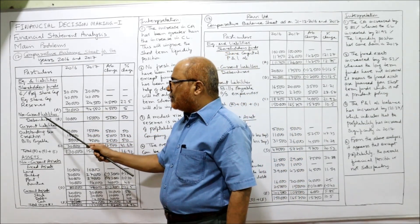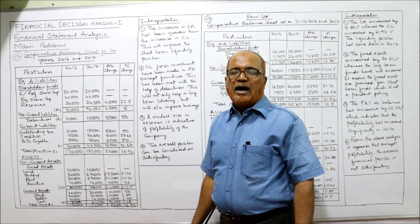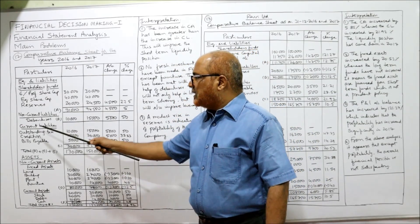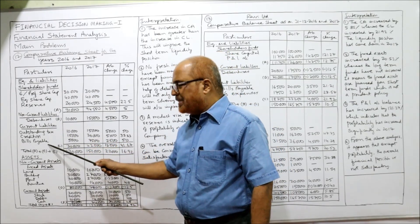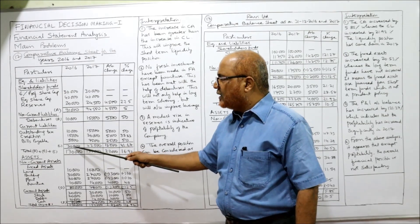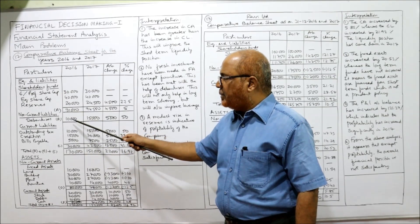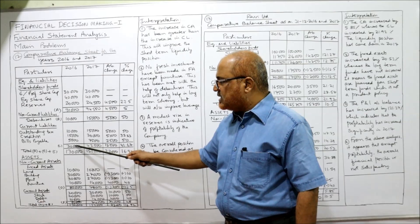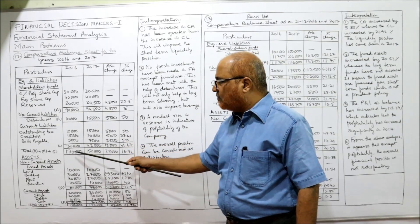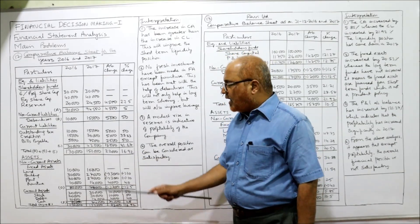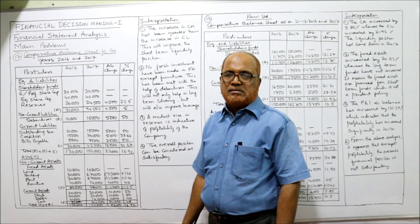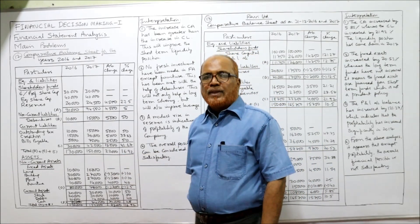Non-current liabilities are debentures, denoted as B. Current liabilities are outstanding tax, creditors, and bills payable — these three are denoted as C. So A is shareholders' fund, B is non-current liabilities, C is current liabilities. A plus B plus C gives the total of liabilities: 1,30,000 last year and 1,52,000 current year — that is the total of equity and liabilities.